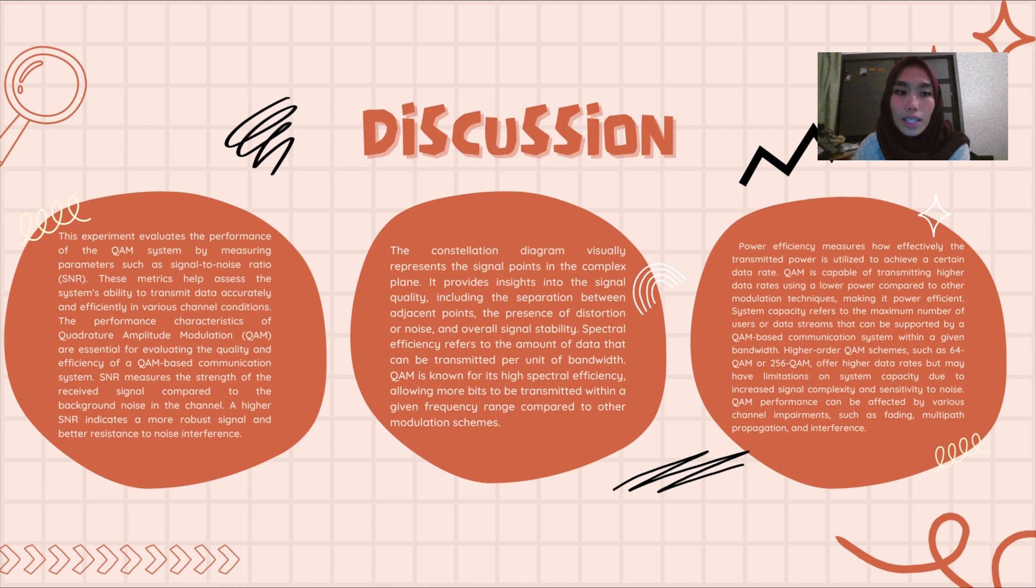The constellation diagram visually represents the signal points in the complex plane. It provides insights into the signal quality including the separation between adjacent points, the presence of distortion or noise, and overall signal stability. Spectral efficiency refers to the amount of data that can be transmitted per unit of bandwidth. QAM is known for its high spectral efficiency, allowing more bits to be transmitted within a given frequency range compared to other modulation schemes.